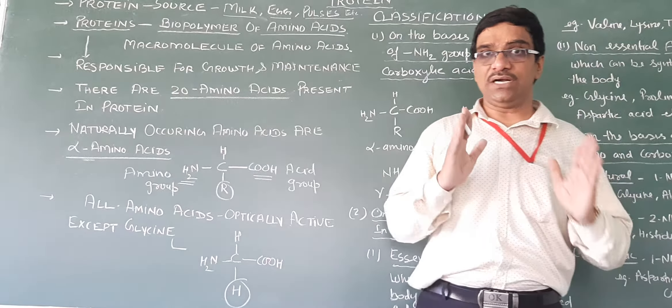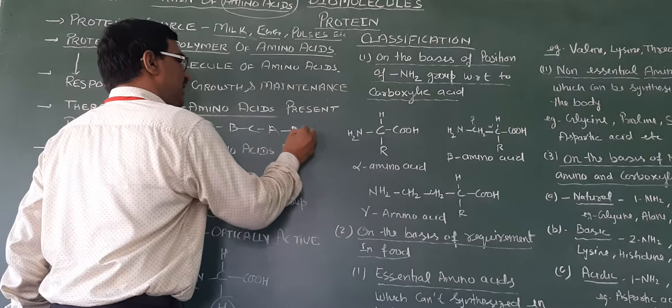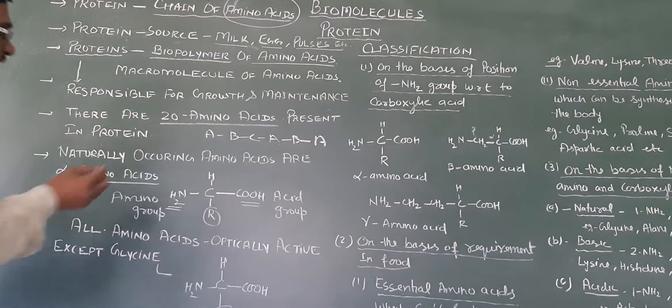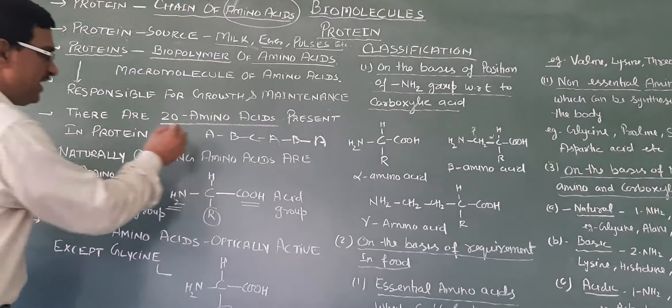For example: A, B, C, A, B, A. The repetition pattern varies. This means proteins are amino acid chains where the monomer sequence is not fixed. That is called proteins.